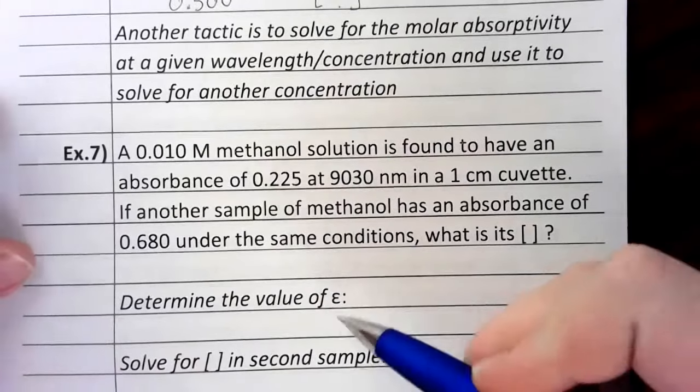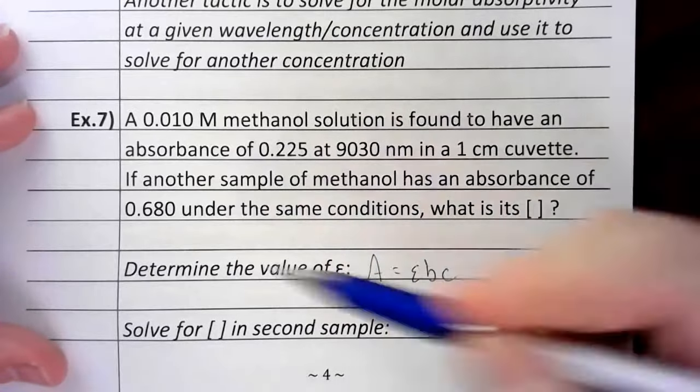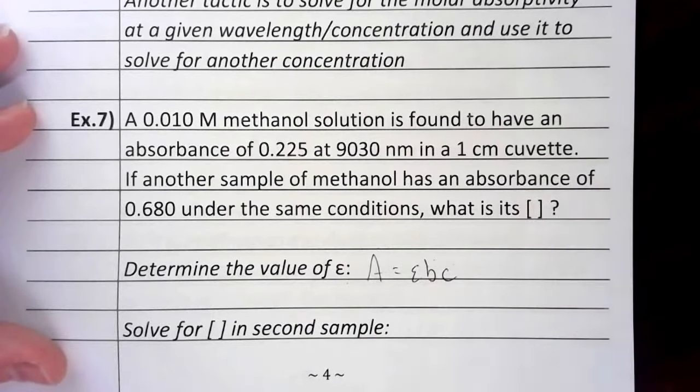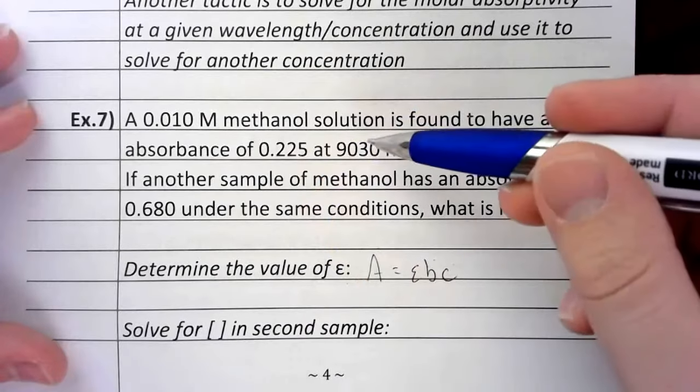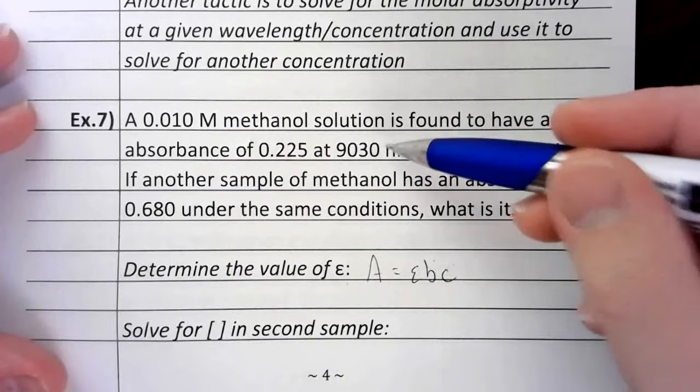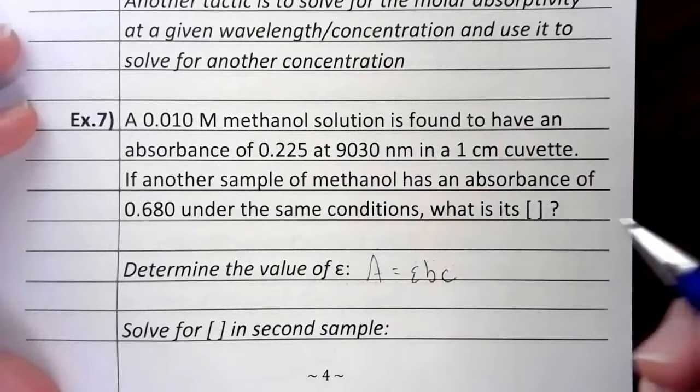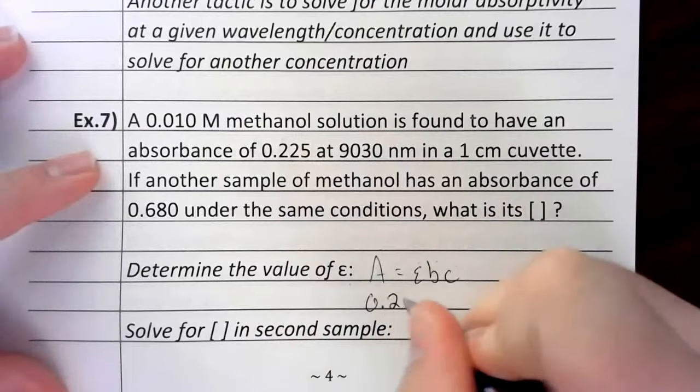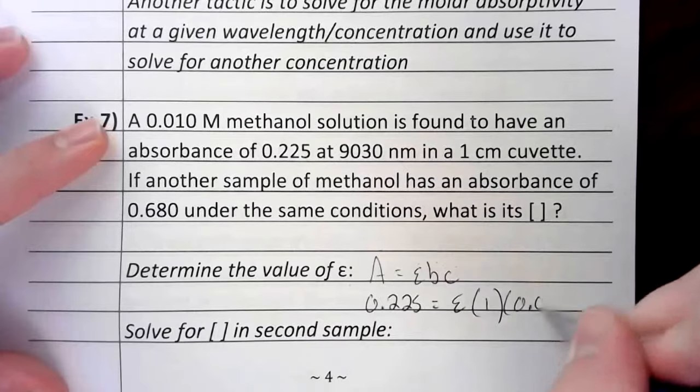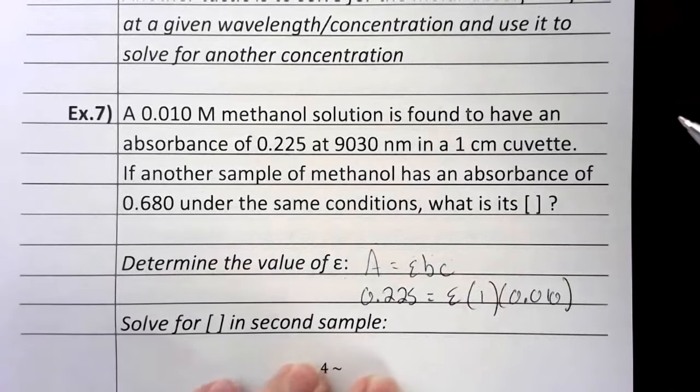Now, another tactic is to solve for epsilon. Let's say I gave you the equation A equals εbc. The problem here gives you the absorbance, it gives you the b, it gives you the c. Solve for ε for me. Now, in case you're wondering, you should not have used the wavelength. Wavelength does not feature in this equation at all. The only reason you need to know this is because at this wavelength, ε will be good. So, if you solve it at a new wavelength, ε should change. So, the absorbance here was 0.225, we don't have the ε, we do have the path length as 1, and then the concentration was 0.010. If you solve this out, you should have gotten an ε value of 22.5.